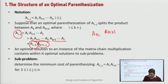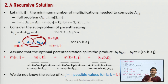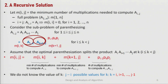We now recursively define this situation. The value of block M[1][n] will give the answer. If i equals j, meaning there is only a single matrix, there is no cost of computation because the single matrix will not be multiplied with anyone. So M[i][i] = 0 for i = 1 to n.